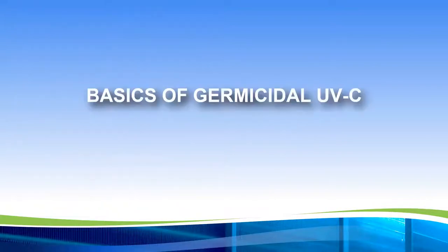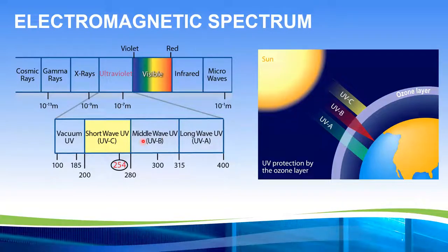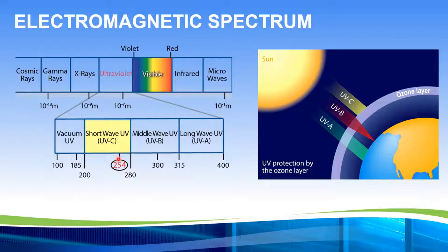Let's do a quick slide about the basics of germicidal UVC. If you look at the electromagnetic spectrum, it covers everything from cosmic rays to microwaves. Inside that spectrum is the visible spectrum — things we see from reds to violets. Right above that is the ultraviolet spectrum, divided into four categories: UVA, B, C, and vacuum UV. This spectrum runs 100 nanometers to 400 nanometers. When we talk about UVC, we're talking specifically at 253.7 — rounded to 254 nanometers. So it's not a tanning bed light, and it's not a cancer-causing portion of UV.